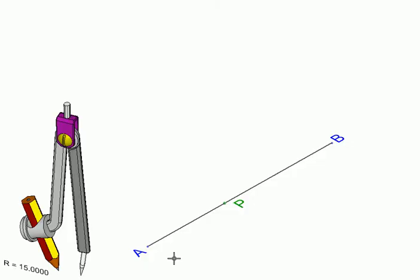Here we have been given a segment AB and a point P on it, and we need to find a perpendicular to AB passing through P. Now we already know how to draw a perpendicular bisector, but P being an arbitrary point, we can't use that construction.